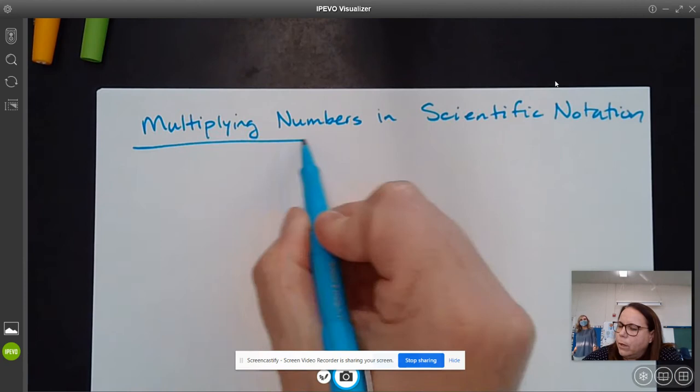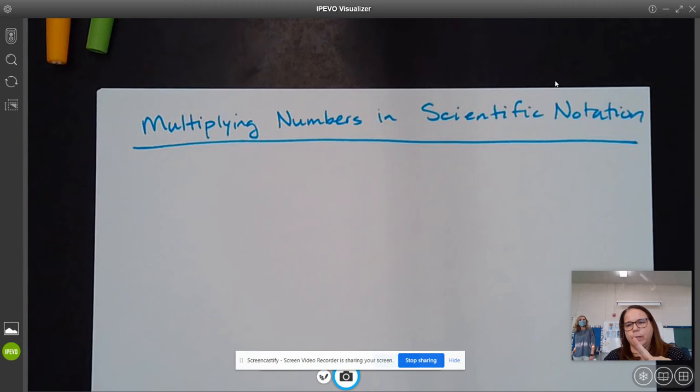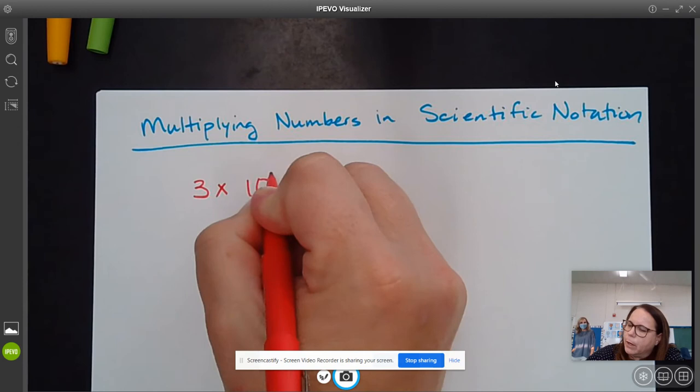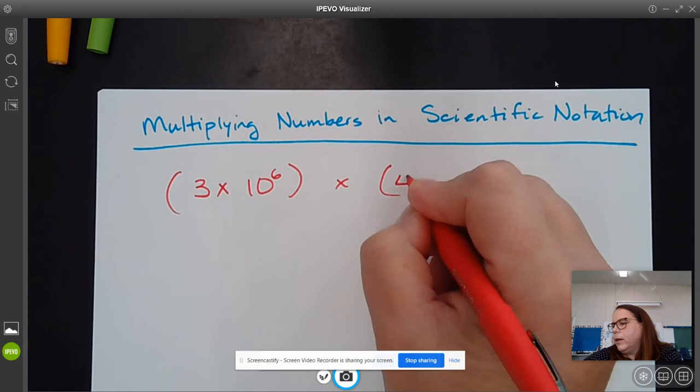When we do this, one of the things we want to make sure that we remember are two things you have already learned about: the commutative property of multiplication and the rules for adding exponents when you multiply two numbers with exponents.